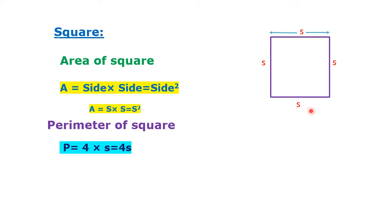Perimeter of square P equals 4 times S, which equals 4S. That means four sides.